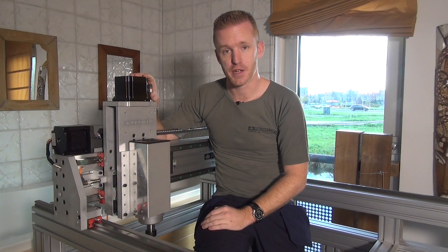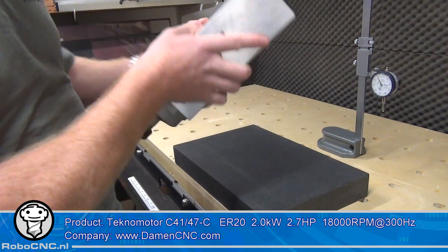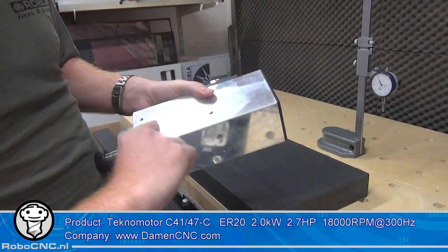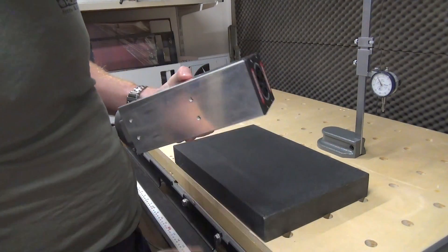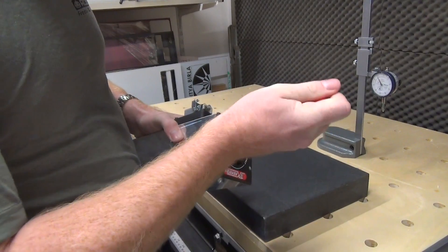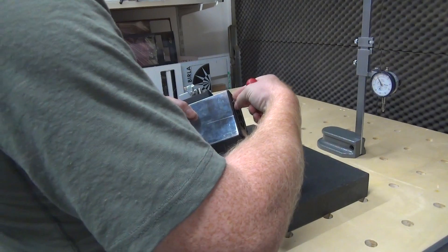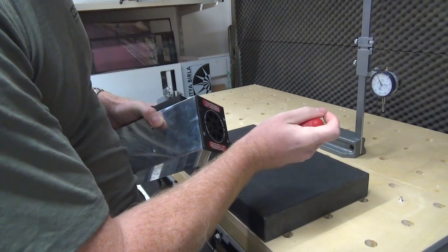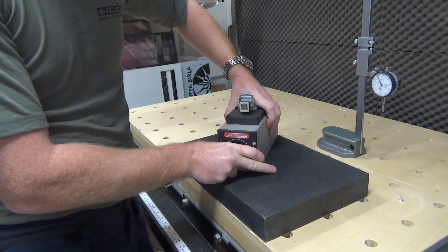So this is the Techno motor spindle that we're going to use. As you can see, it has two shiny surfaces which are machined to be square with the spindle. The only thing that's not machined is this plastic cover, so I'm going to remove this for measuring purposes. You will understand that it's really important that this spindle will be mounted square on the CNC machine, so that's why Techno motor has these machined surfaces. It makes mounting quite easy for us.